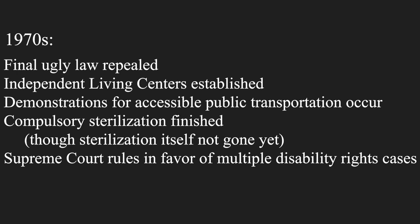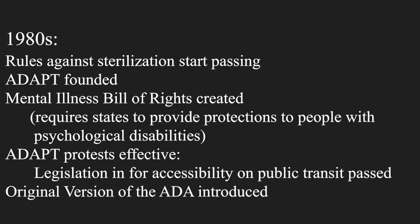The disability rights movement wasn't over yet. Still in the 1970s, protesting led to the final ugly law being repealed, independent living centers were established in many cities, the first demonstrations for wheelchair-accessible public transportation occurred, and compulsory sterilization was all but finished. In the 1980s, rules against sterilization started passing, Americans Disabled for Accessible Public Transit — ADAPT — was founded, the Mental Illness Bill of Rights Act required states to provide protection for people with psychological disabilities, widespread ADAPT protests saw legislation in the direction of accessibility and public transport, and in 1989, the original version of the Americans with Disabilities Act was introduced.